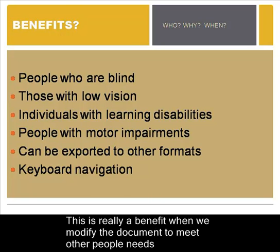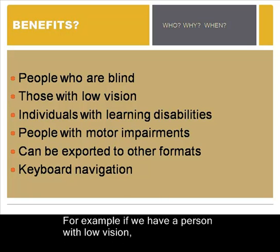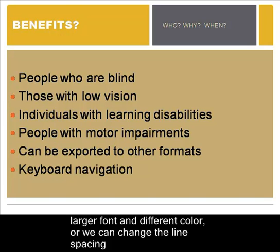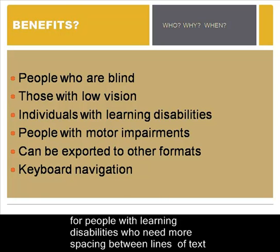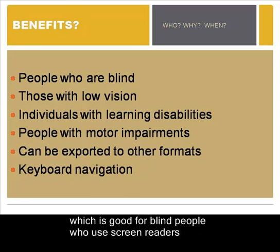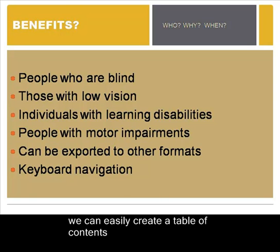This is really a benefit when we modify the document to meet other people's needs. For example, if we have a person with low vision, we can create a new style for that person with a larger font and different color. Or we can change the line spacing for people with learning disabilities who need more spacing between lines of text. Styles also help us make our document keyboard navigable, which is good for blind people who use screen readers or for people with motor impairments, because we can easily create a table of contents.